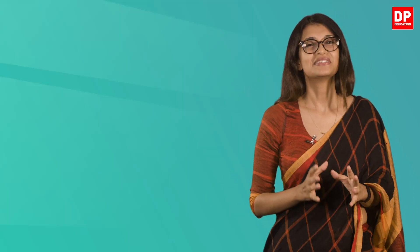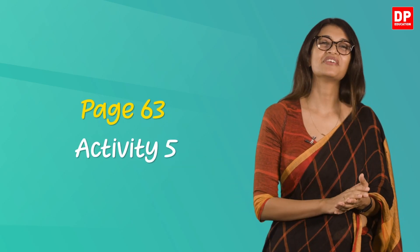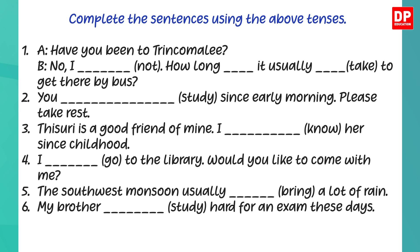Now that we have a rough idea about the present perfect continuous tense and all the other present form tenses found in the revision point on page 63, let's attempt Activity 5 on page 63. Complete the sentences using the above tenses: 'Have you been to Trincomalee?' 'No, I have not.' 'How long does it usually take to get there by bus?' 'You have been studying since early morning — please take a rest.'